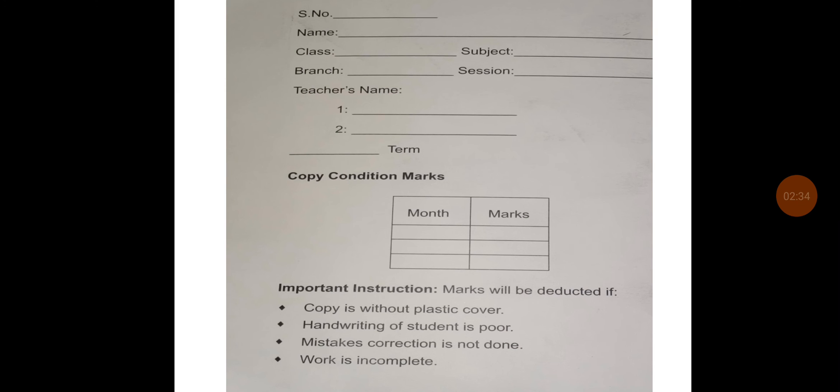Now move on to the inside the card cover. You will start from the serial number. Again, you leave this line because you are not clear about your serial number. Then write your complete name. After this, mention your class and section. In subject, you will write Physics. In branch, you will write girls too. Then session. In session, you will write 2021-22.